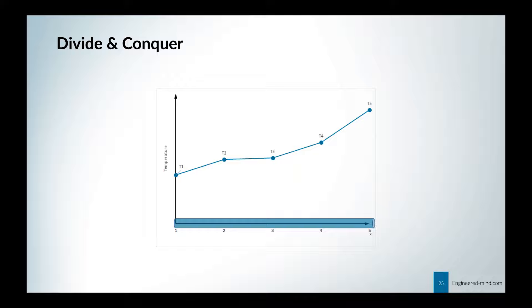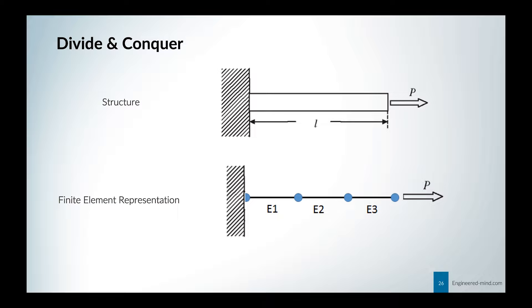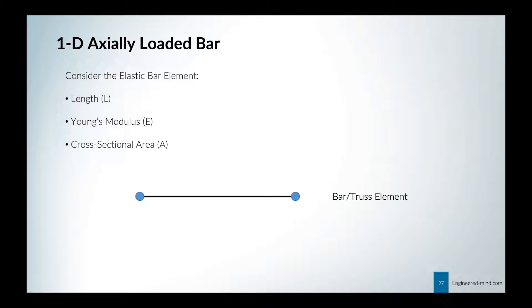Here we can see a structure, and to have a finite element representation, we chop it into pieces — in this example, three elements and four nodes. If we take a 1D axially loaded bar, we have the following properties: length L, Young's modulus E, and cross-sectional area A. Now we take this element and want to derive the stiffness matrix. Don't be overwhelmed — I will go through the equations step by step.